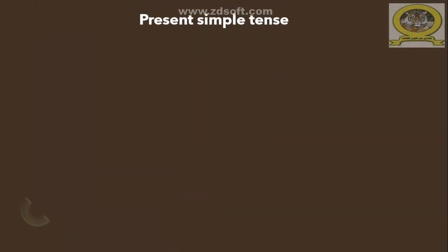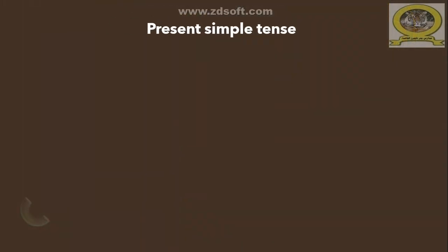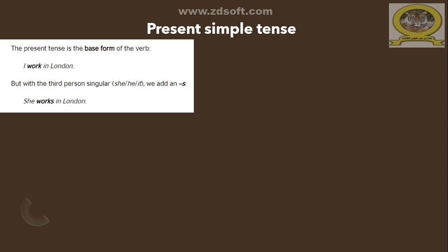Now we are going to talk about a structure. The structure in this unit is the present simple tense. The present tense uses the base form of the verb — like, 'I work in London.' But with the third person singular — he, she, it — we add -s, -es, or -ies to the verb. Like, 'She works in London.'